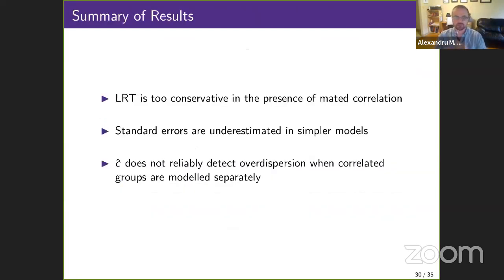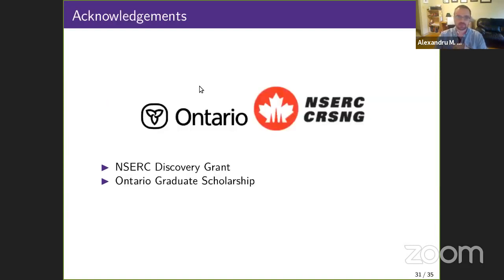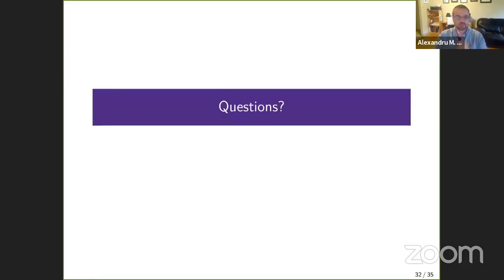To summarize, in the presence of mate correlation, we have that the likelihood ratio test is overly conservative, standard errors are underestimated for simpler models in our hierarchy, and the c-hat correction does not work reliably when we model the correlated groups separately. So we need to find a way to either detect this overdispersion better, or we need to come up with a more general model that works in practice. I'd like to thank NSERC and the government of Ontario for providing both a research grant and a scholarship. And so that concludes my presentation. Does anyone have any questions?